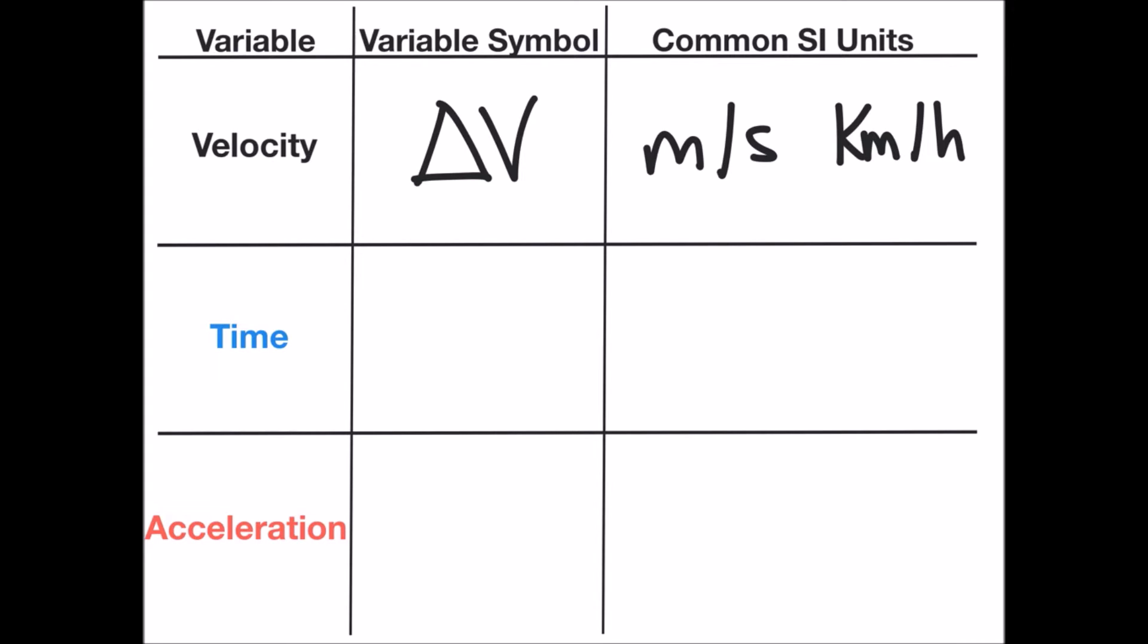Change in time is the second variable. We use delta t to show this, and common units for change in time could be milliseconds, seconds, and hours.